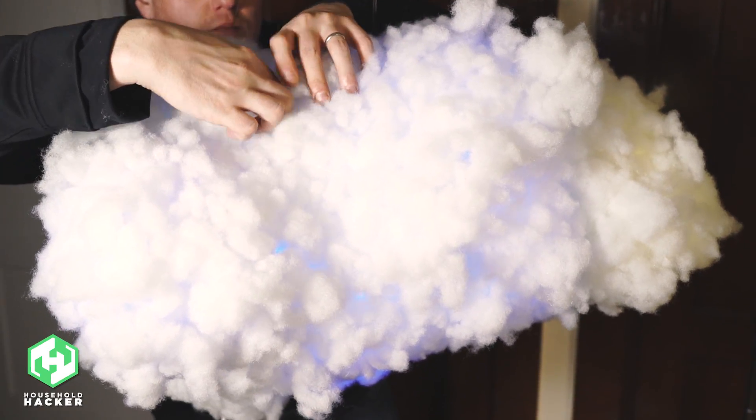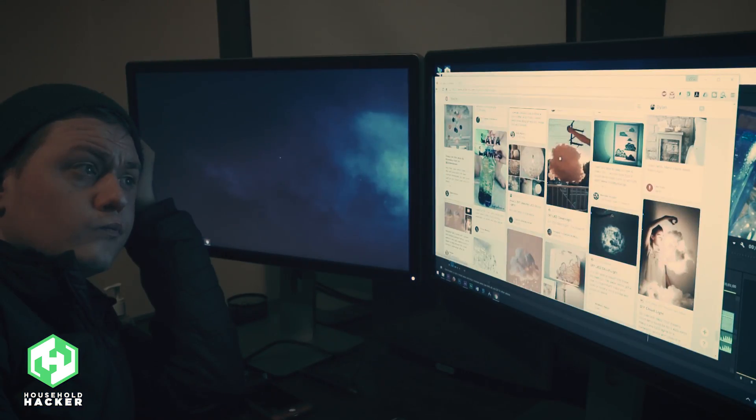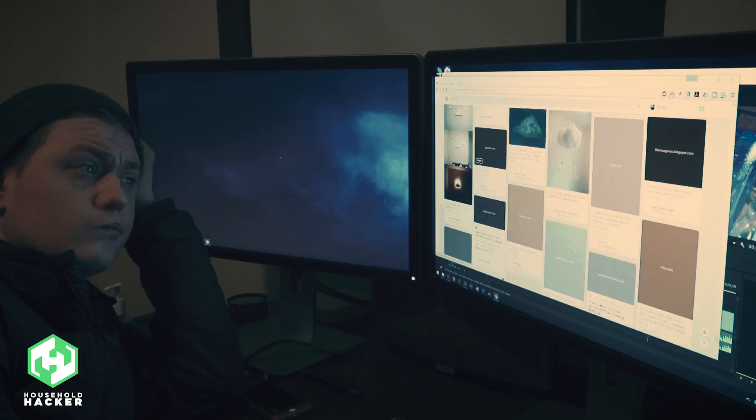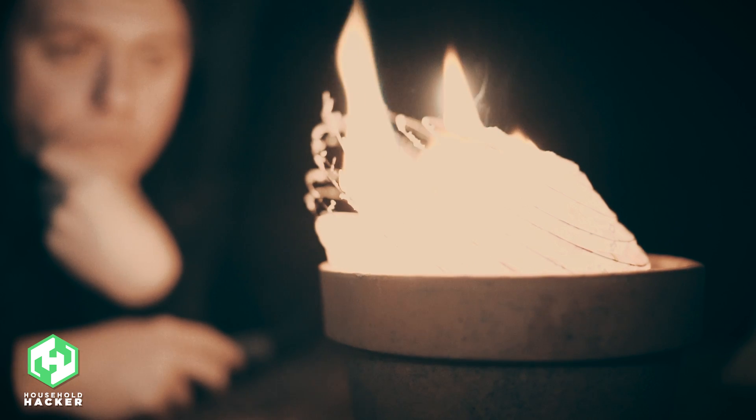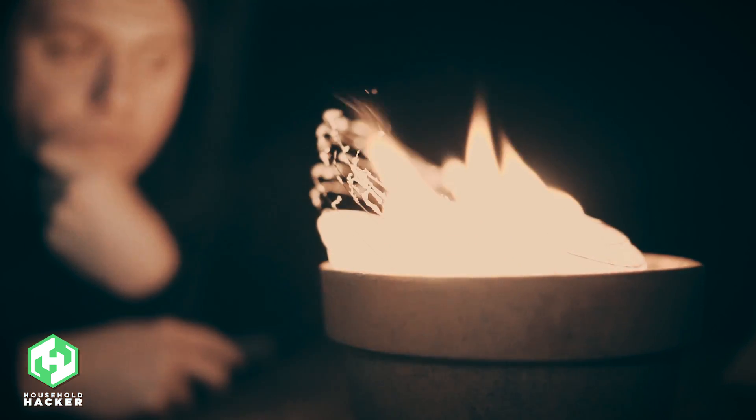Today we're gonna build a cloud lamp that gives the illusion of a cloud floating around in your room. You might have seen pictures of people making their own. It involves going to the store and buying cotton batting and a paper lantern. Well, I like using things I already have around the house, and I also don't care much for paper lanterns. So let's throw out their instructions and build one household hacker style.